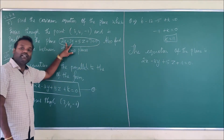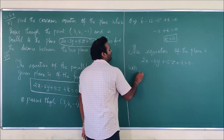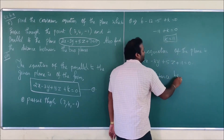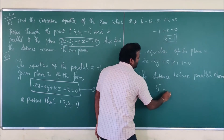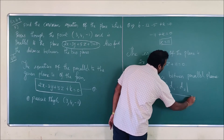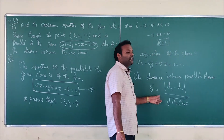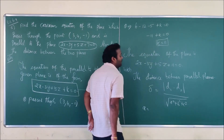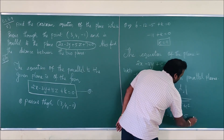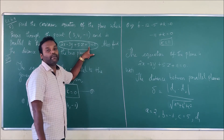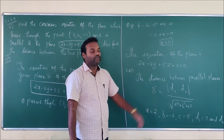Now we are going to find the distance between the given plane and the identified plane. The formula for the distance between parallel planes is: delta equals modulus of (d1 minus d2) divided by the square root of a² plus b² plus c². Identifying the values: a is 2, b is -3, c is 5. d1 from the first plane is 7, and d2 is 11.